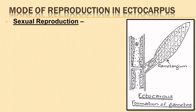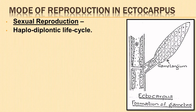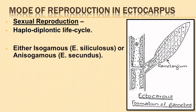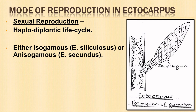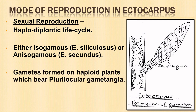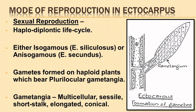The sexual life cycle of Ectocarpus is haplodiplontic. It consists of an alternation between haploid male and female gametophyte and diploid sporophyte generation. Ectocarpus is either isogamous or anisogamous. Gametes are formed on haploid plants after the germination of zoospores liberated from the unilocular sporangia. The plants bear plurilocular gametangia, which are multicellular, sessile or short-stalked, elongated conical structures.